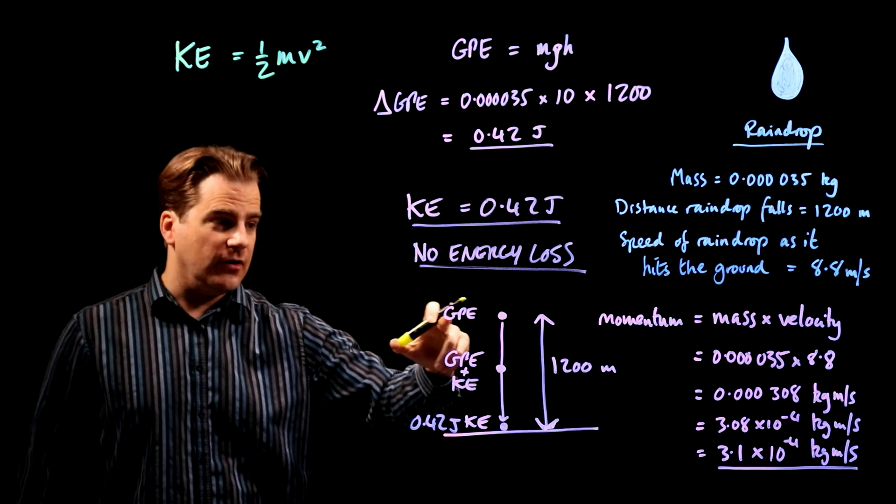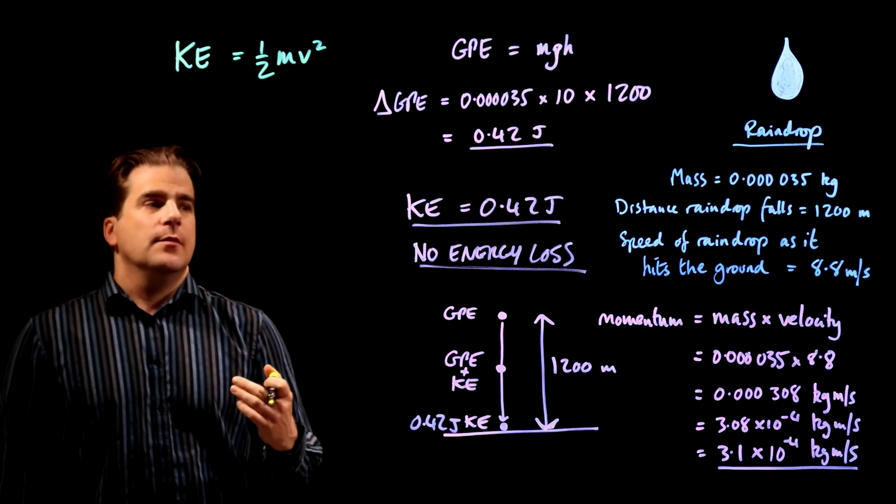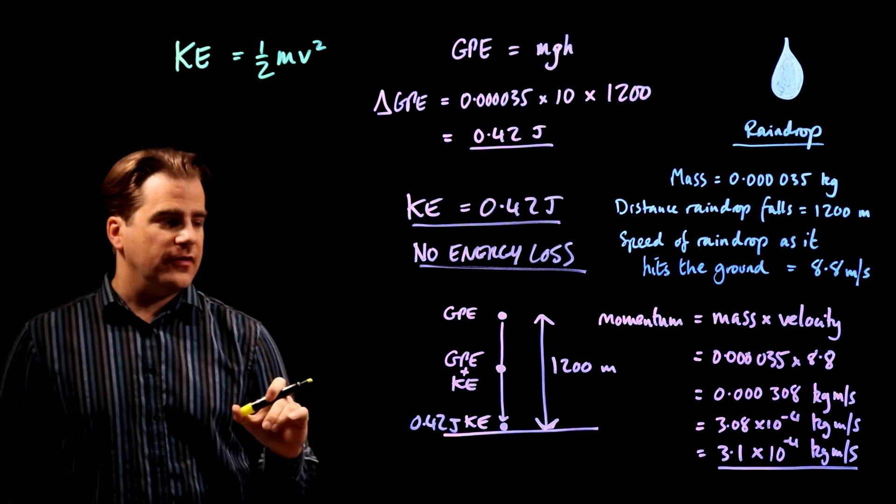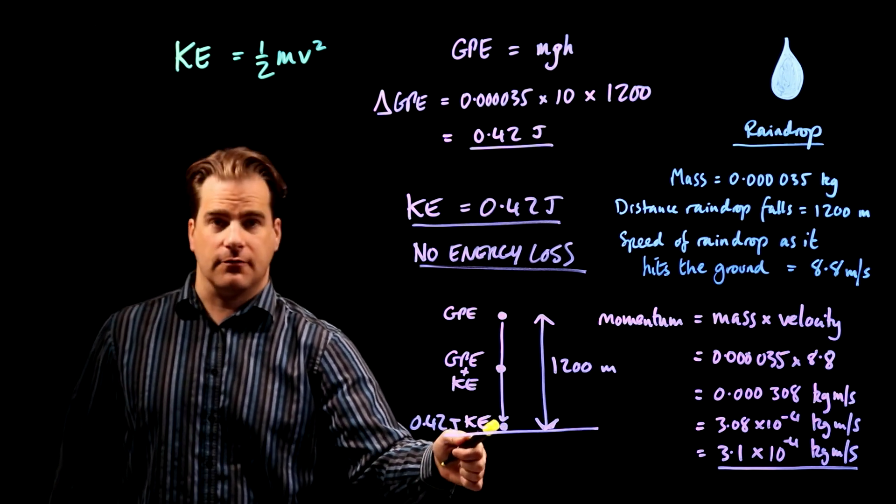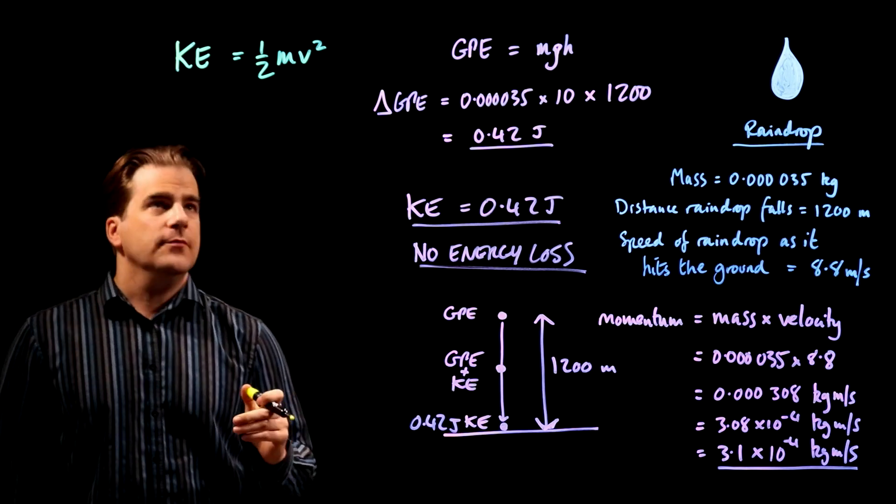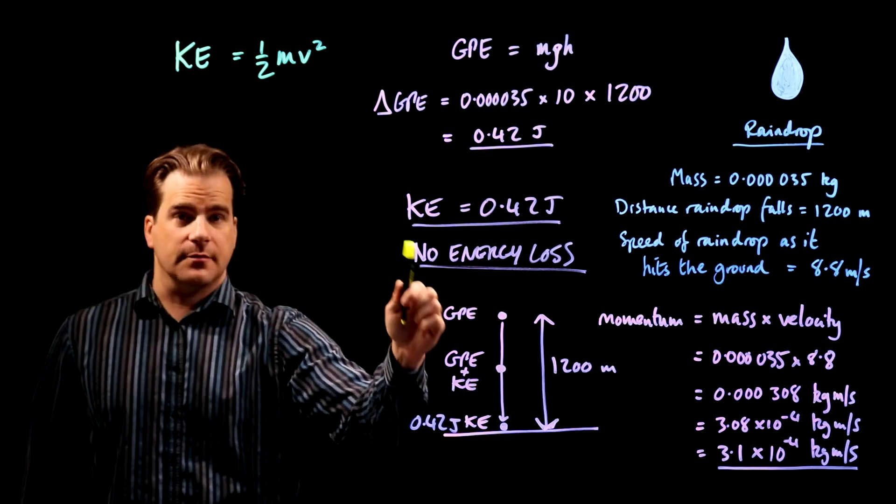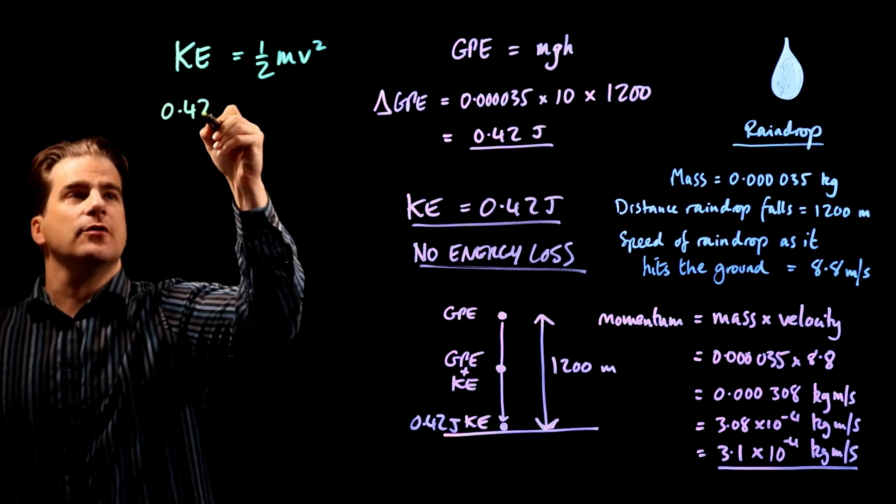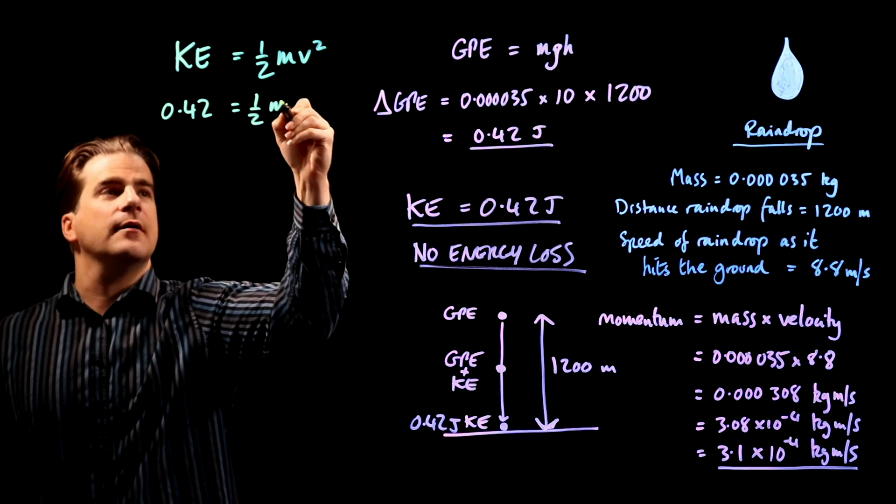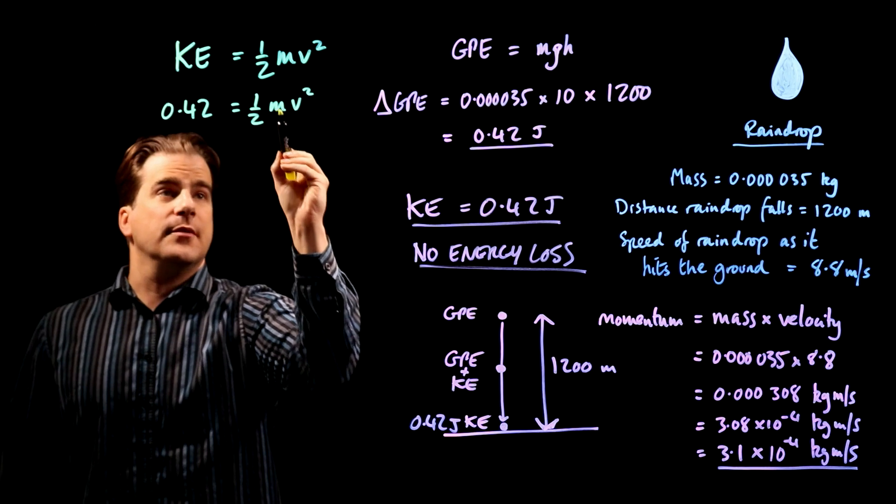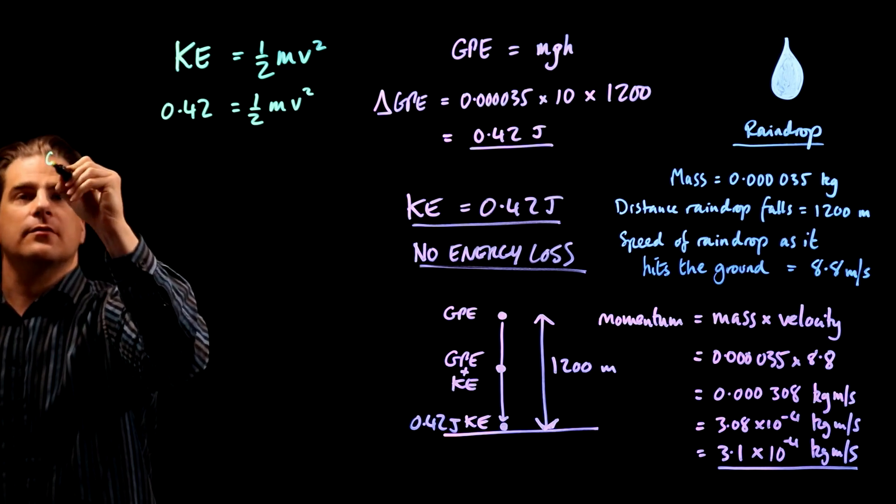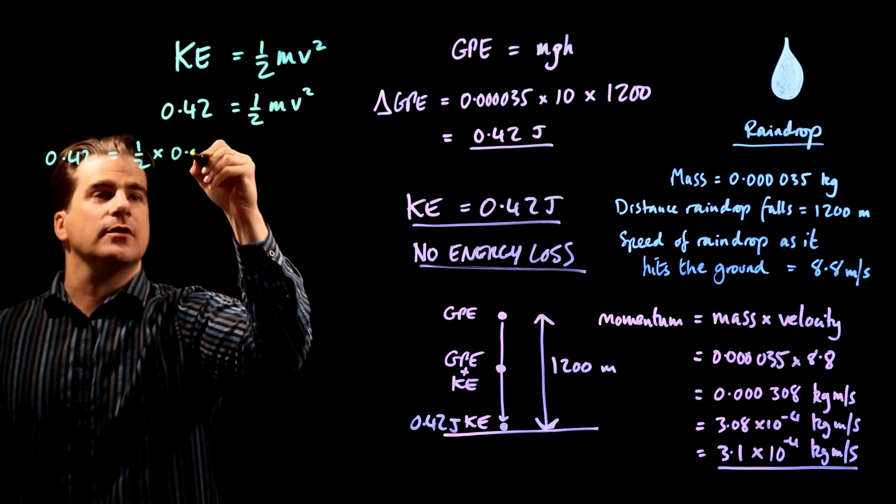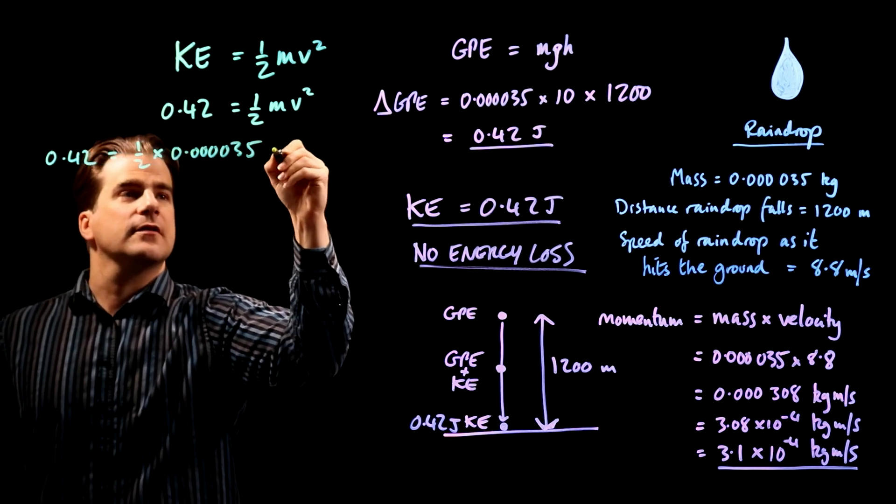Show that the speed of the raindrop as it hits the ground would be about 150 metres per second if there were no energy losses. Three marks. Okay. So, we're told that this raindrop hits the ground at 8.8 metres per second, but that's in reality, okay, because there is energy loss as it falls from friction with the air. But, if there were no air, if this happened in a vacuum, okay, and all the GPE converted to KE, what would the final velocity of the raindrop be?